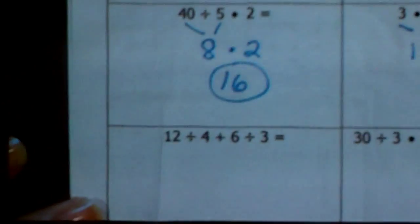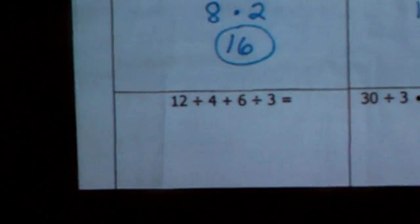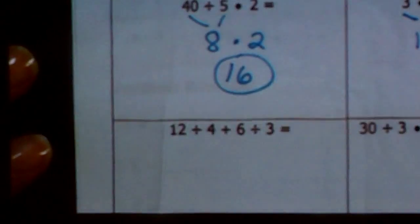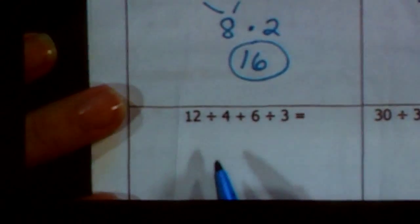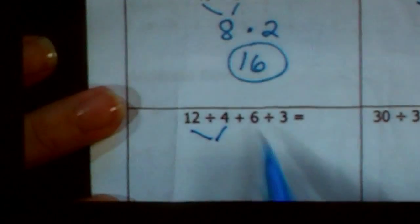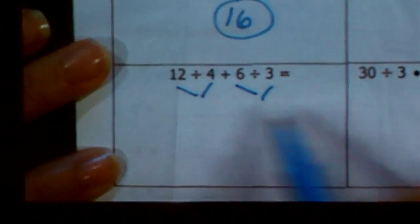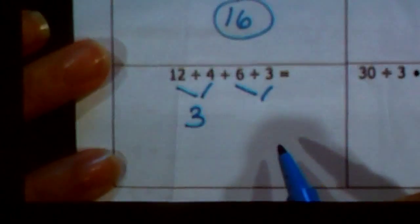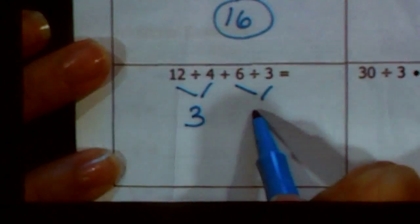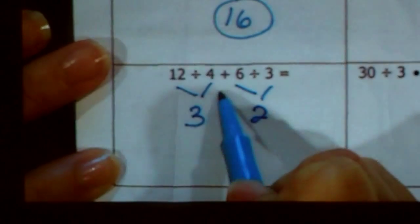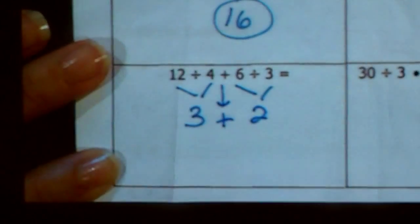They're getting longer. All right. Here I have division, addition, and more division. So you are going to divide first in both sets. So 12 divided by 4 is 3. 6 divided by 3 is 2. And then we're just going to bring this addition sign straight down, and that gives you 5.